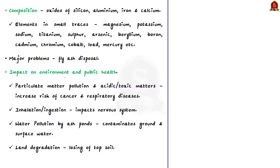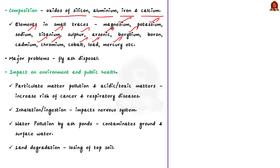If we come to its composition, primarily it consists of oxides of silicon, aluminum, iron and calcium. It also includes some elements to a lesser degree such as magnesium, potassium, sodium, titanium, sulfur, arsenic, cadmium, chromium, cobalt, lead and mercury. One of the major problems associated with fly ash is its disposal, which becomes a concern due to the effect fly ash has on the environment and public health.